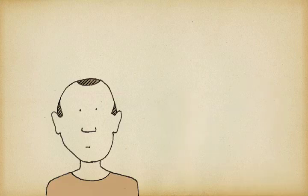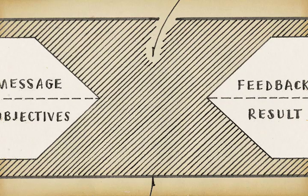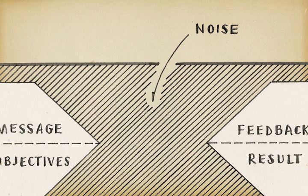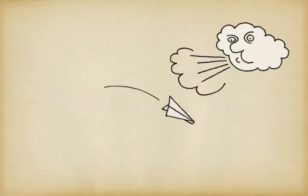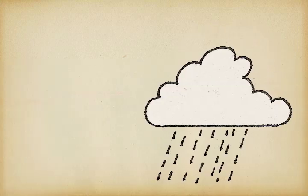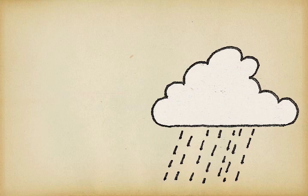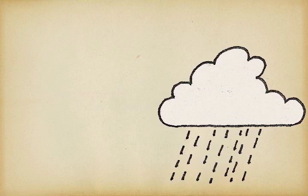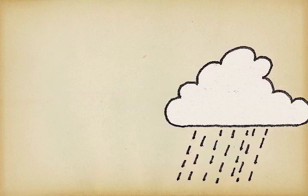Now, one last thing. This huge grey area in the middle is called noise. Noise is not just sound — it can be other types of interference like wind or rain. If you are outside, be aware of the elements. You don't want your message to end up in the wrong hands.